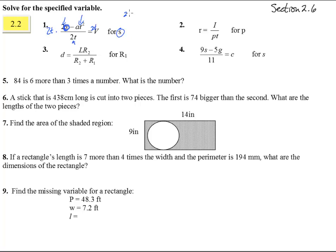And that lets me have 2s minus at squared equals 2tv. Now add at squared to both sides, so I get 2s equals 2tv plus at squared. And divide both sides by 2, and I get s equals 2tv plus at squared all over 2.